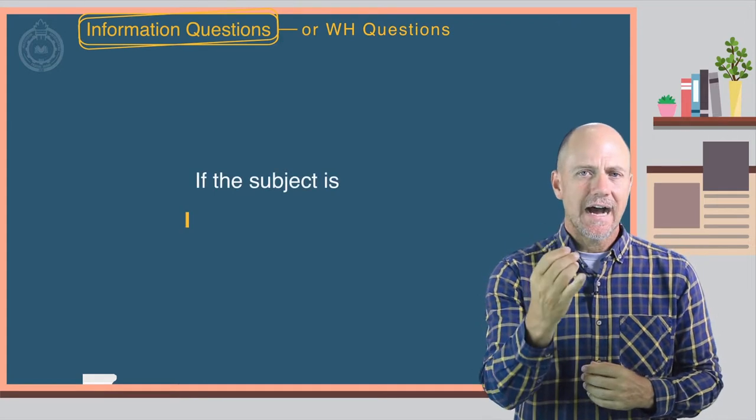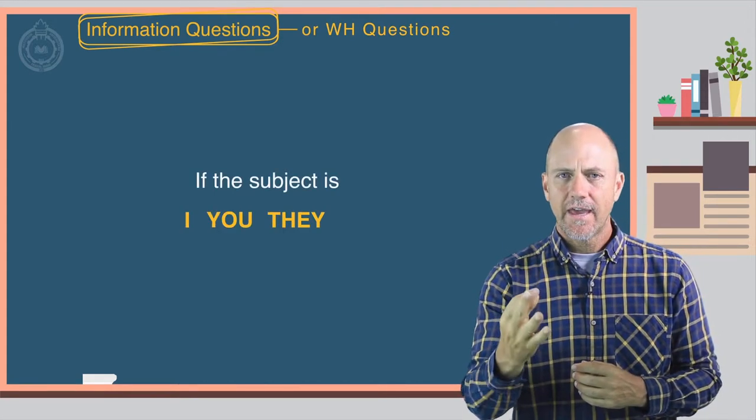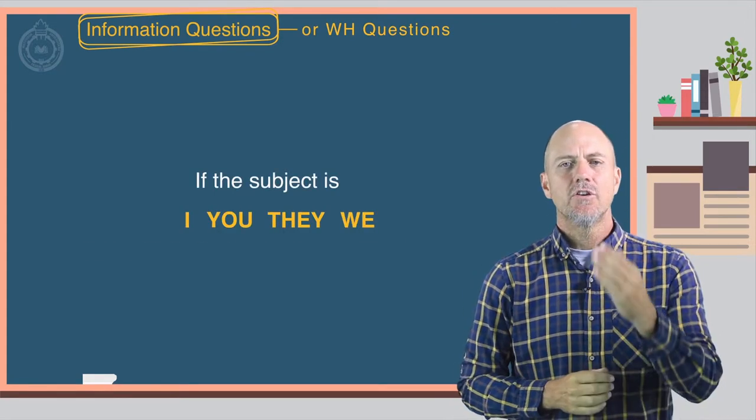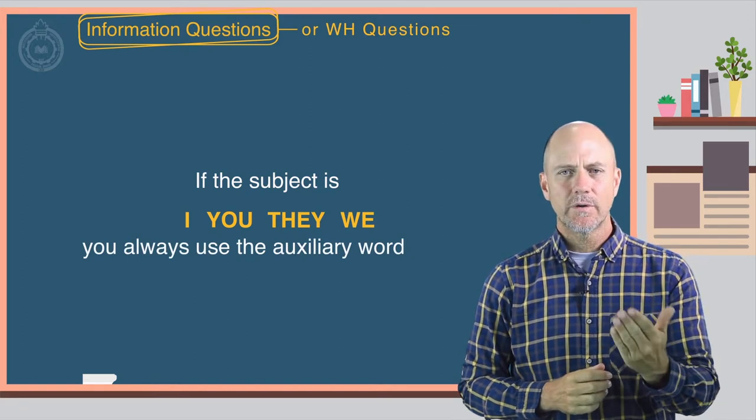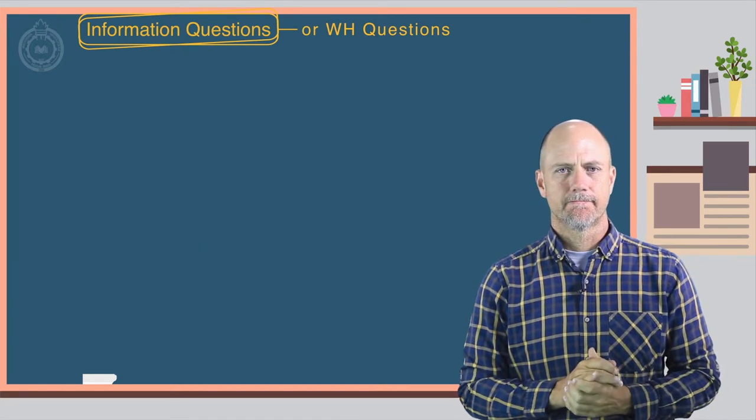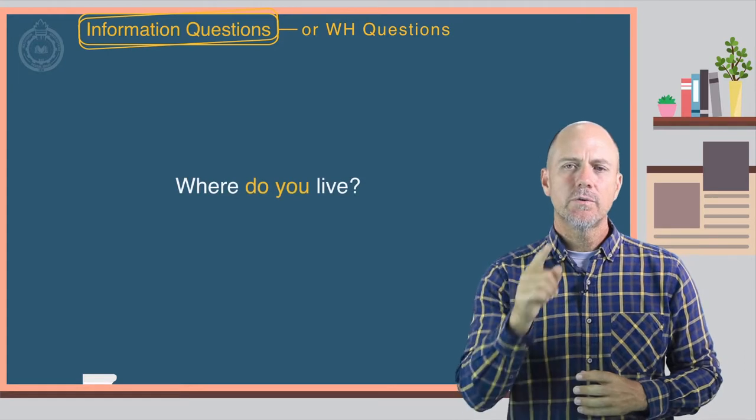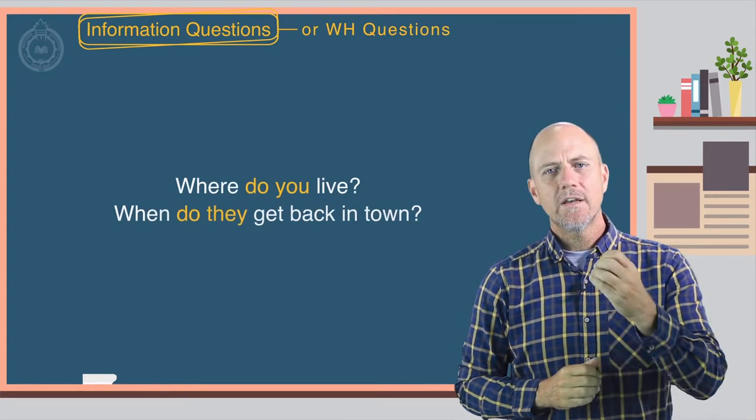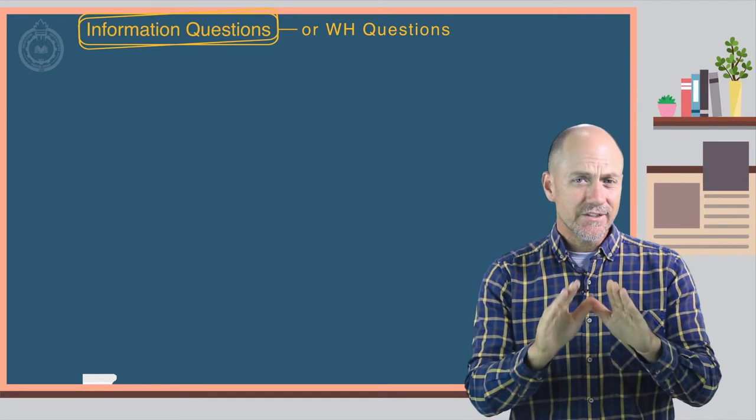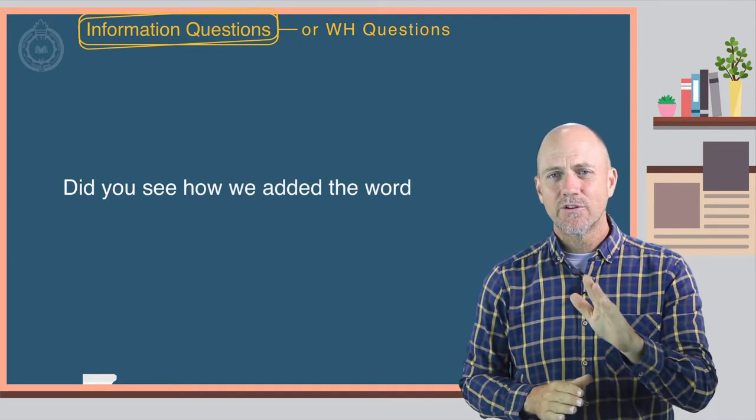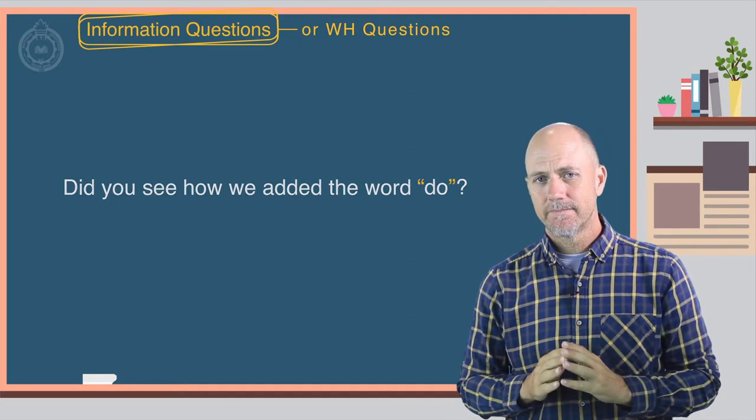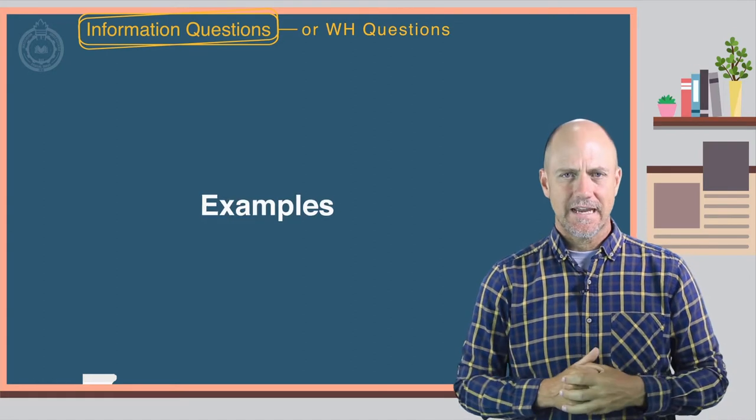If the subject is I, you, they, or we, you always use the auxiliary word do. For example, where do you live? When do they get back in town? Did you see how we added the word do? Here are some more examples.